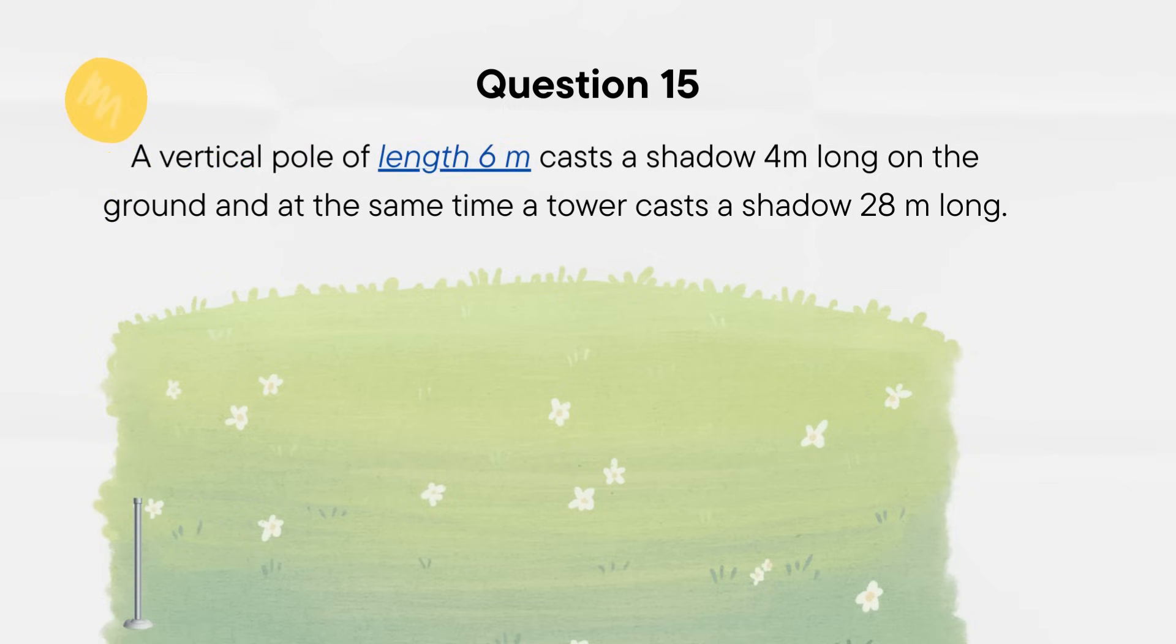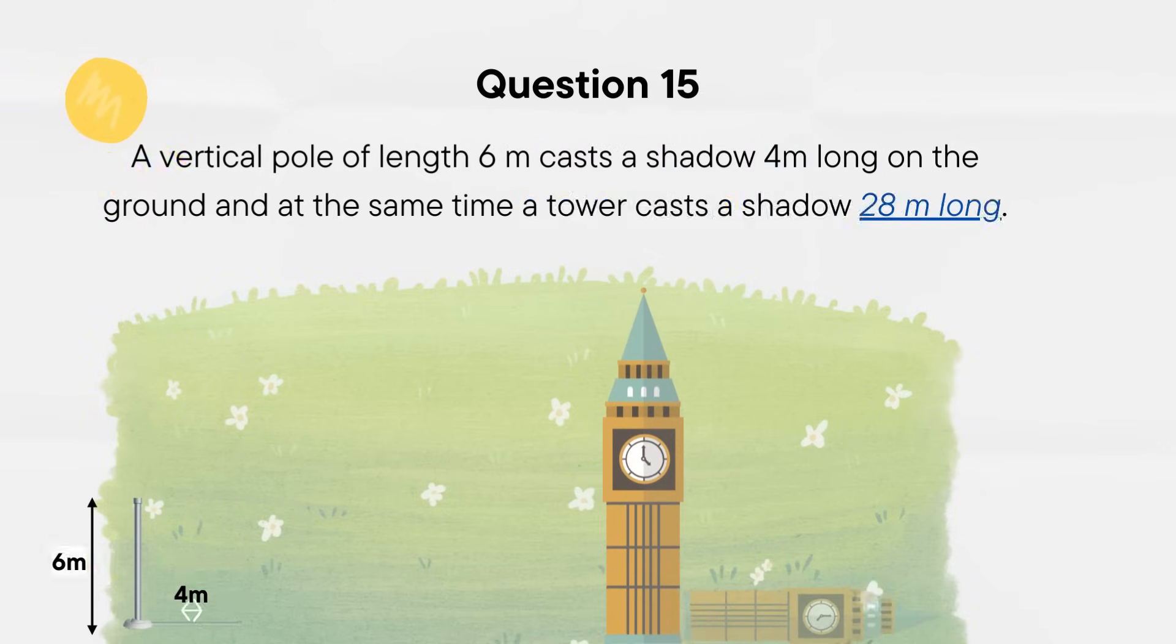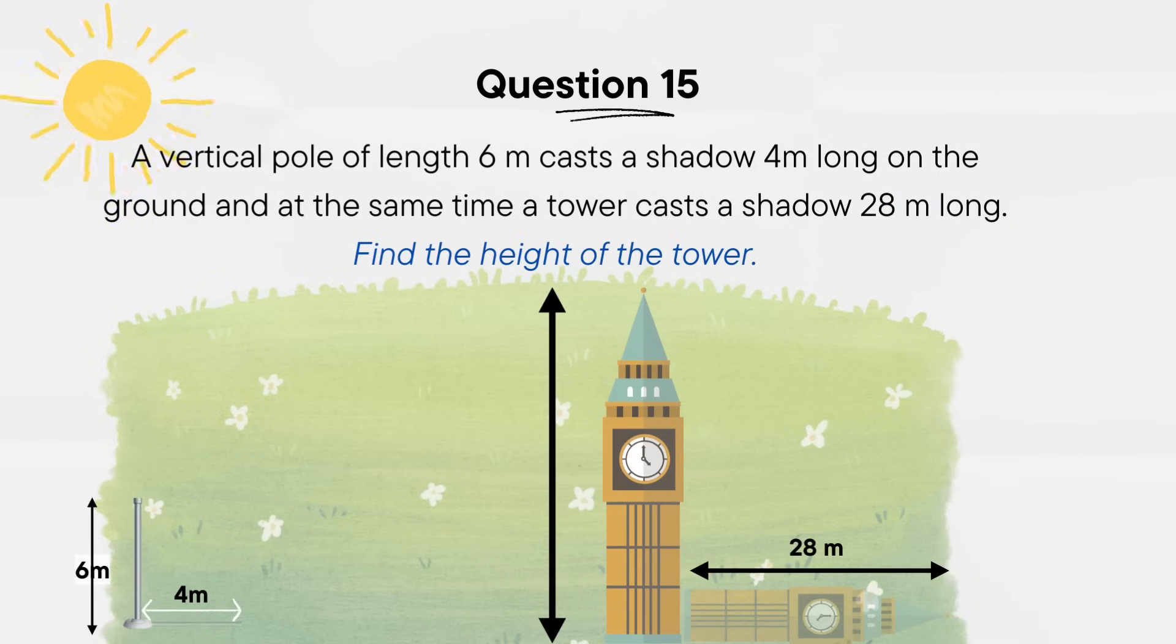A vertical pole of length 6 meters casts a shadow 4 meters long on the ground and at the same time a tower casts a shadow 28 meters long. Find the height of the tower.